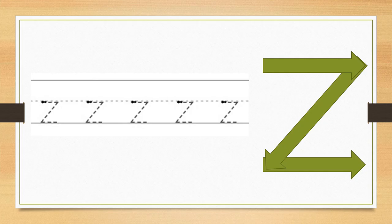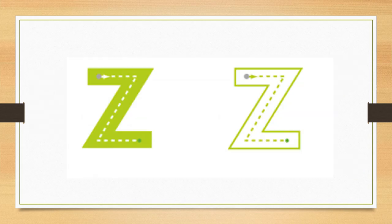Draw a straight line from the left to the right. From the end of the right side of that line, draw a slanted line down to the left. From the bottom of that line, draw a straight line to the right, just like the arrows. Now it is your turn. Draw the letter Z on the table, just like you see here.